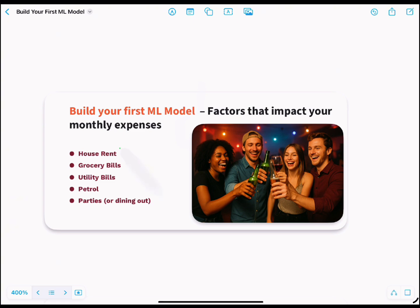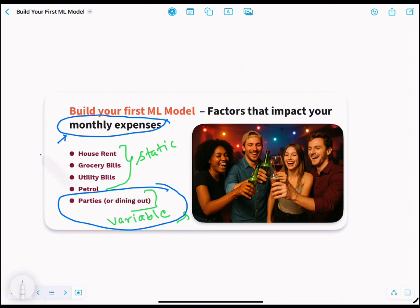So now let's break it down. Your monthly expenses have just two parts. You have fixed costs which are static, like rent, groceries, and petrol - they barely change. And you have variable costs, like how often you go out. So here, monthly expenses are your dependent variable, and number of parties is your independent variable.